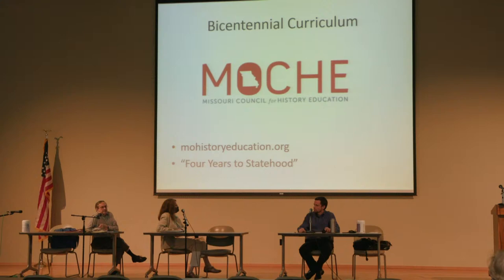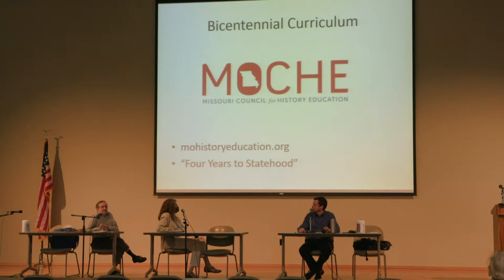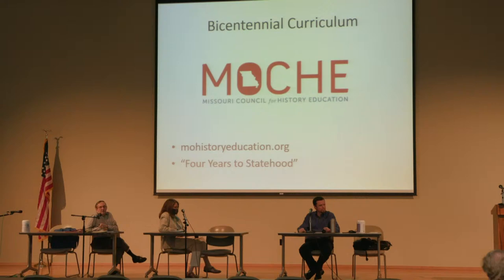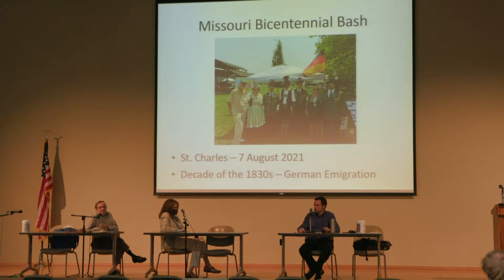One of the things sponsored by the Bicentennial Alliance was a series of curricula. The Missouri Council for History Education has one available called 'Four Years to Statehood' that deals with the period 1818 through 1821 through the eyes of a 12-year-old person alive in Missouri at that time — a Native American girl, a French ancestor of former Missouri Senator Kit Bond, a Black family up in Pike County, Missouri, and then the daughter of Rufus Easton, who was part of the first state government in St. Louis.